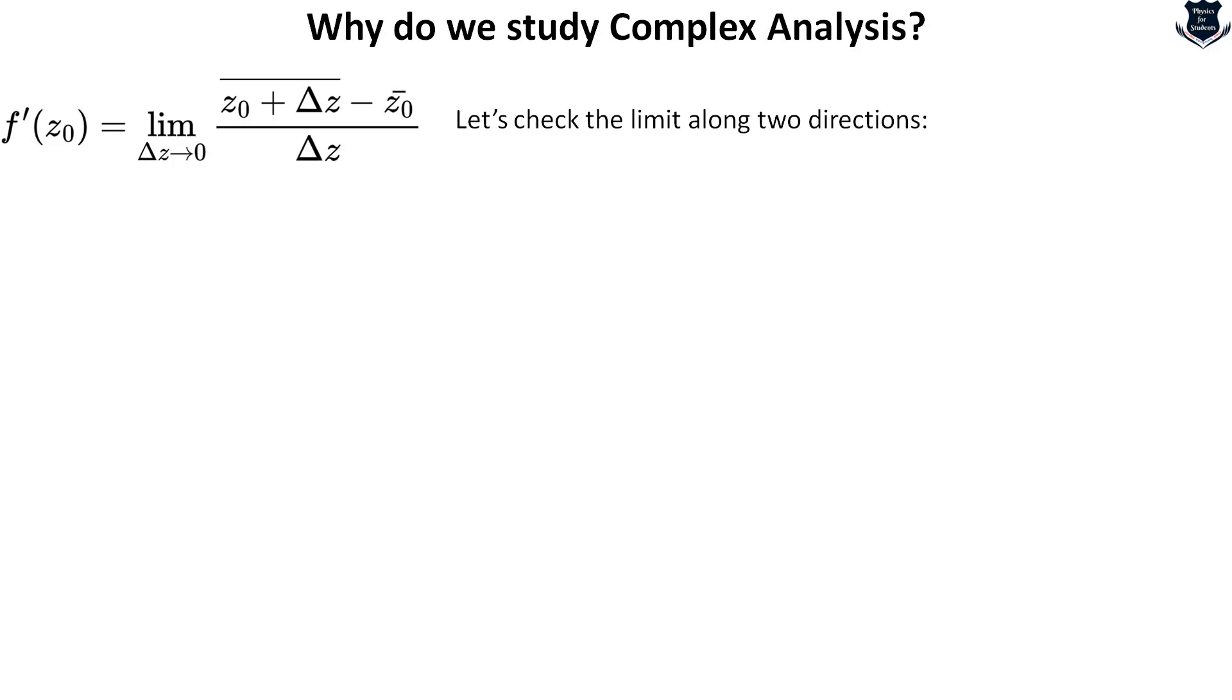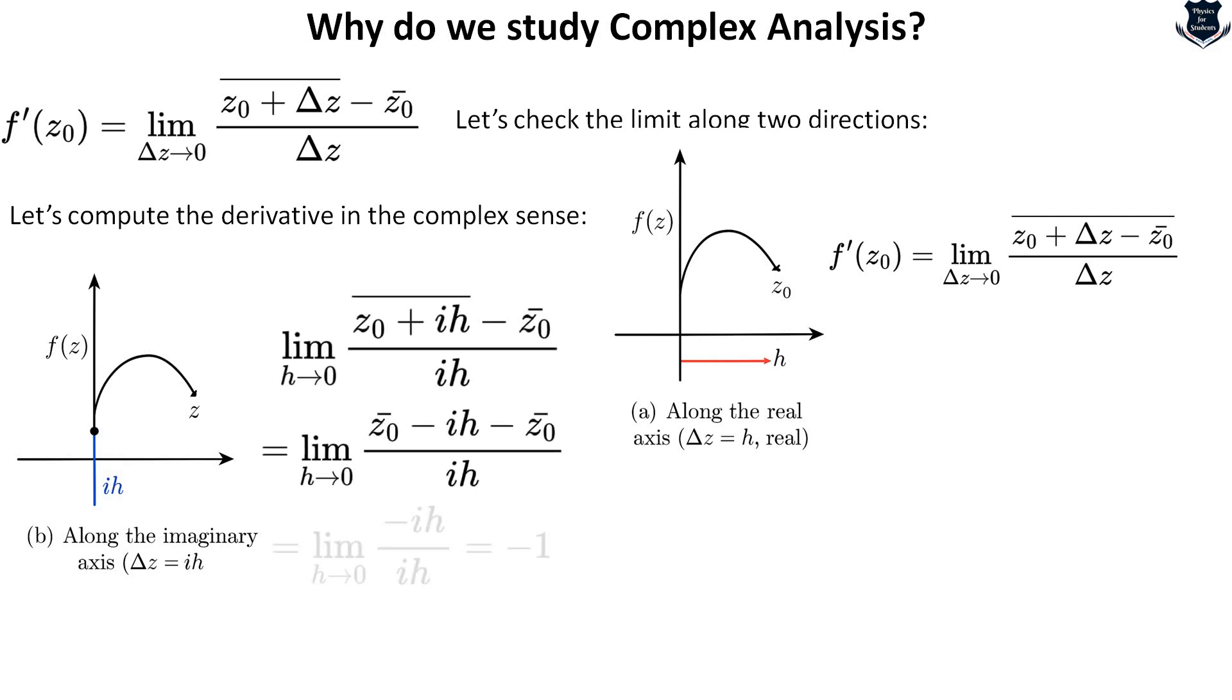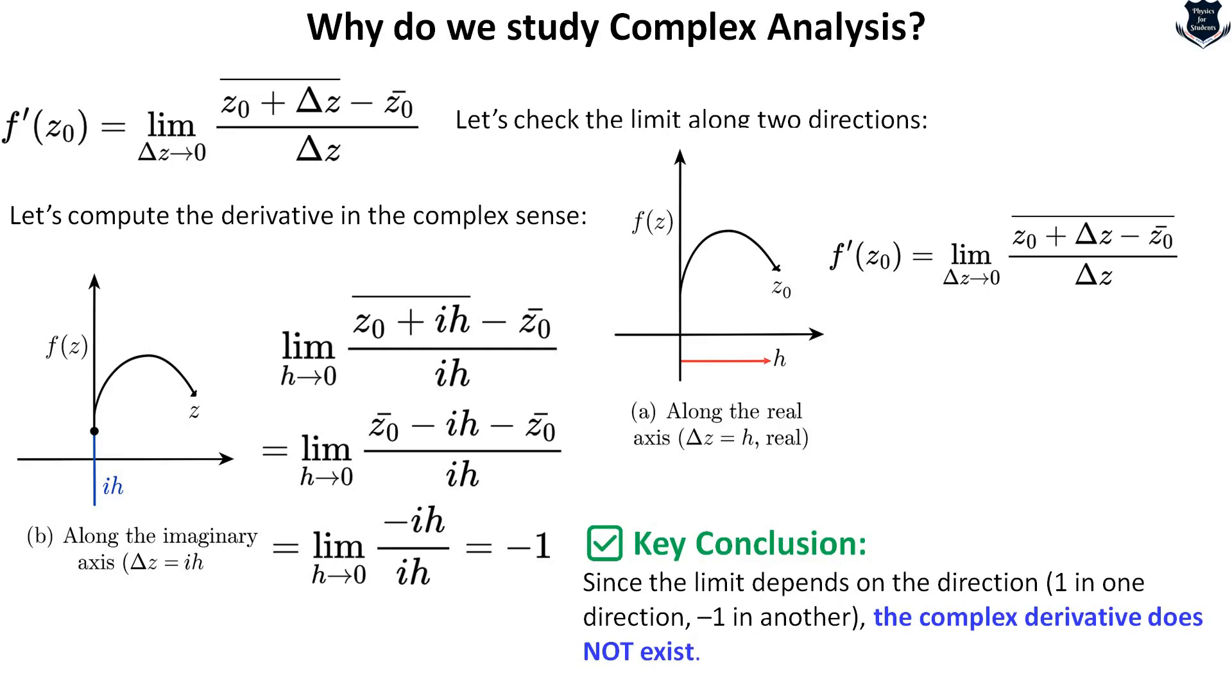When we do the complex differentiation we get a value like this. Now we will take the limit along two directions. First, the derivative in the complex sense on the real axis. If h is moving towards this it would give 1. If I take the imaginary axis, the value will be, if I calculate the limit step by step which I have skipped, it will give you a value of minus 1. This minus 1 leads to the conclusion.